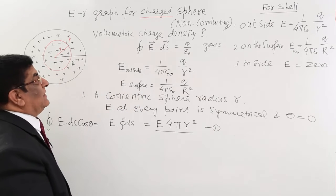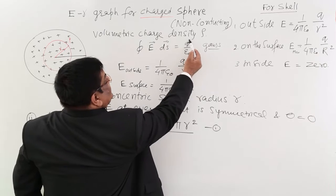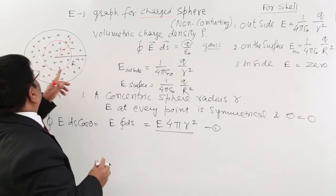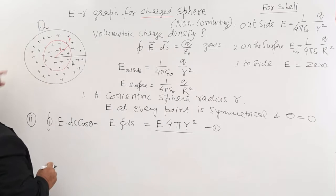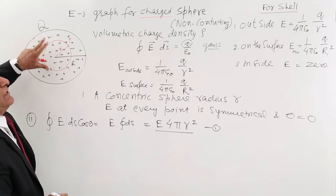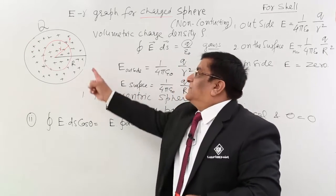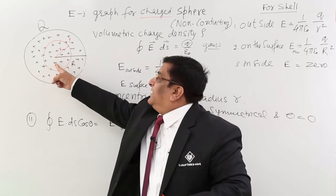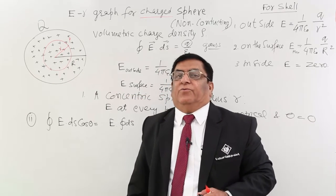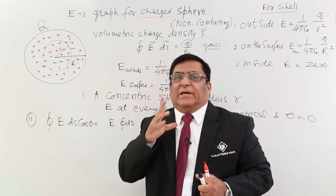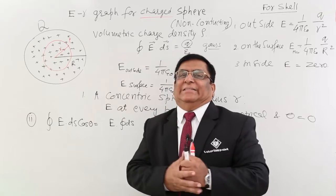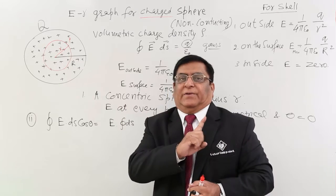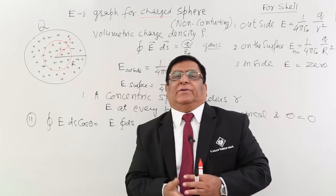The second derivation is more important. This q, what q is this? This is the q which is inside the enclosed surface. Here the charge we have given, capital Q is the total charge given to this. Now can you tell me whether this complete charge Q is inside our Gaussian surface? Answer is no. So many charges are outside and so many charges are inside. According to Gauss, which charges are responsible to make electric field on the surface? Answer: only those charges which are inside the surface, not outside. Whatever is the amount of charges outside the surface will not affect electric field inside the Gaussian surface. Remember this.